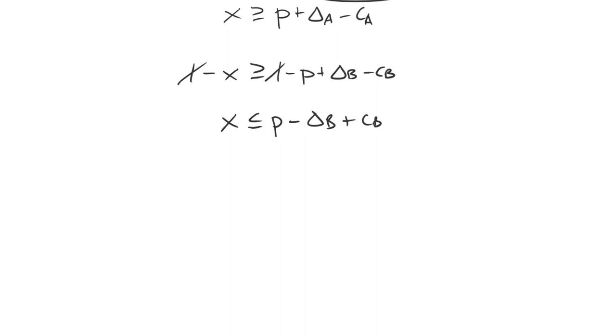P minus delta B plus CB. And if we bring this first inequality down, then we'll know when an X is mutually satisfactory. So if we can find X values that simultaneously make both of those inequalities hold, in other words, find an X value that is less than or equal to P minus delta B plus CB and greater than or equal to P plus delta A minus CA, we're good.